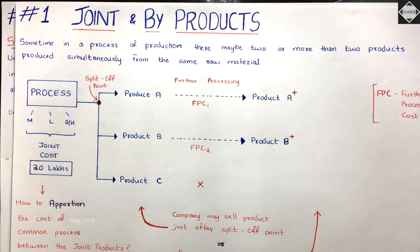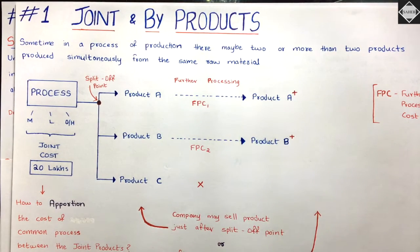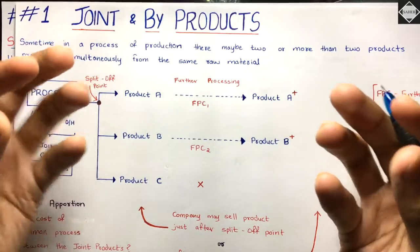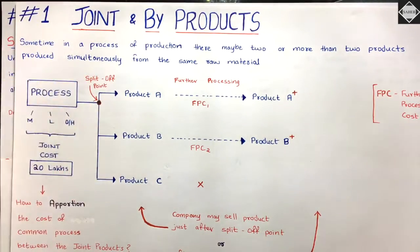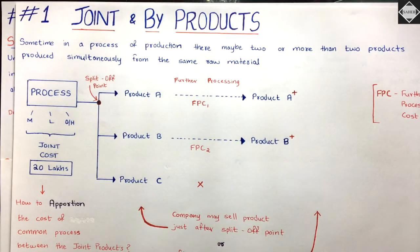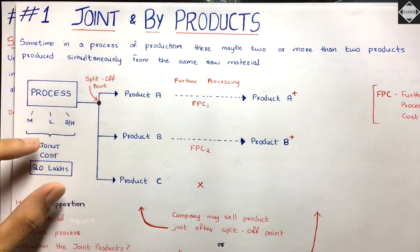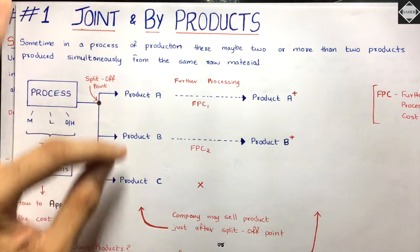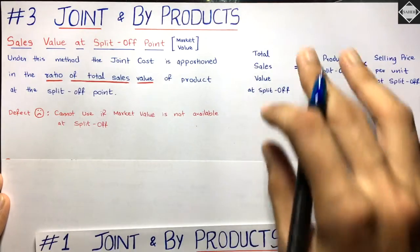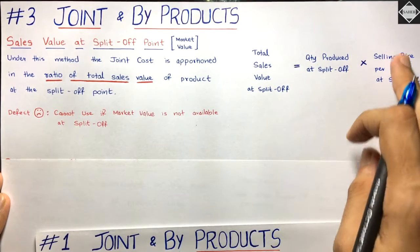I'm not saying selling price per unit alone — I'm saying total sales value. How do you find total sales value? Simple: you just take the quantity multiplied by the selling price per unit. Both of these should be at the split off point. Multiply them and you will get the total sales value of each product at the split off point.